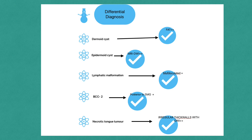These four are the main differential diagnoses of ranula. Another less common differential is a necrotic tongue tumor, which can be differentiated by its wall characteristics — the walls will be thick and irregular, whereas the walls of a ranula are smooth and not irregular.